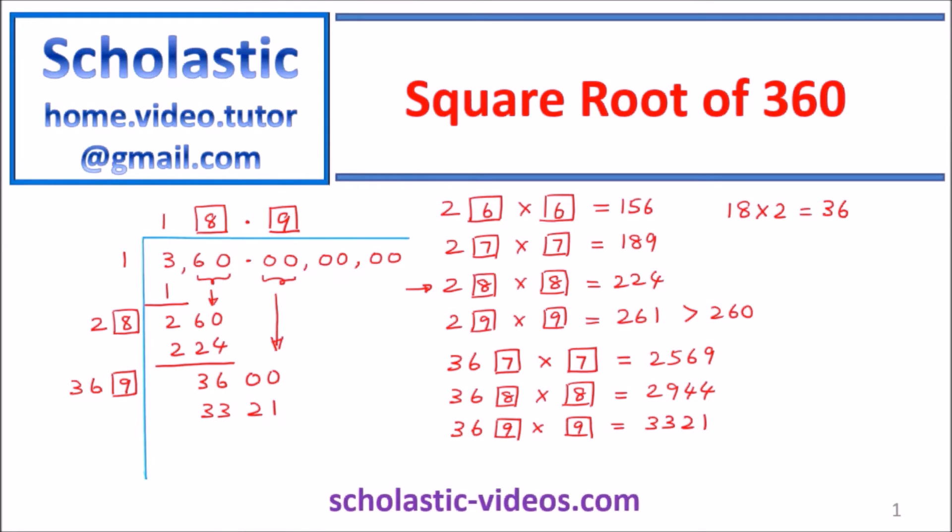So take away 3321 from 3600. What we get here is 279. So append the next two zeros to 279 and then again multiply 189 by 2. 189 times 2 is equal to 378.